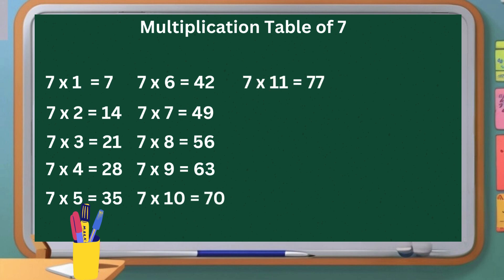Seven elevens are seventy-seven. Seven twelves are eighty-four. Seven thirteenths are ninety-one. Seven fourteenths are ninety-eight. Seven fifteenths are one hundred and five.